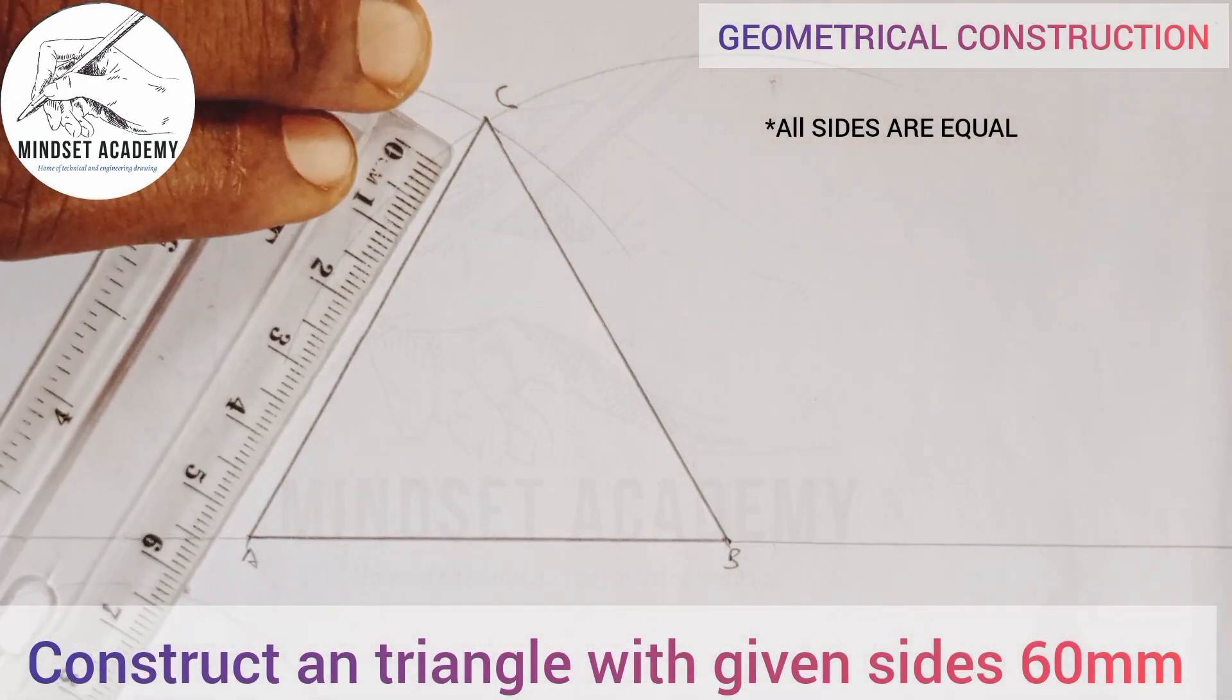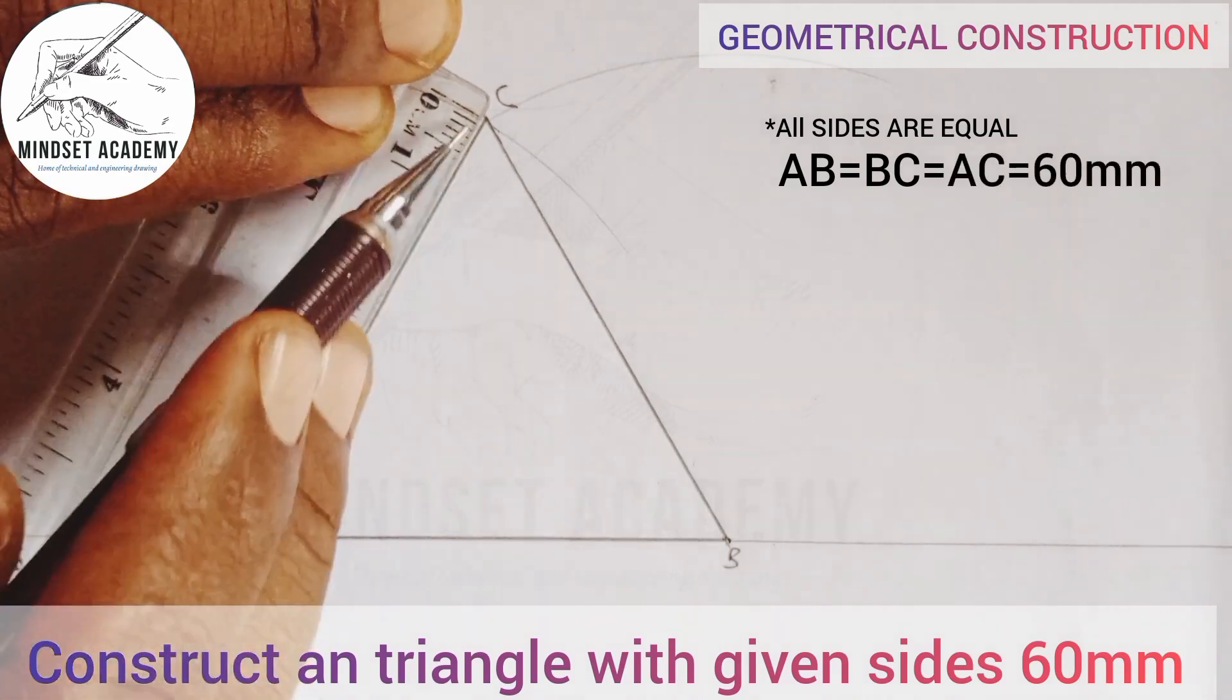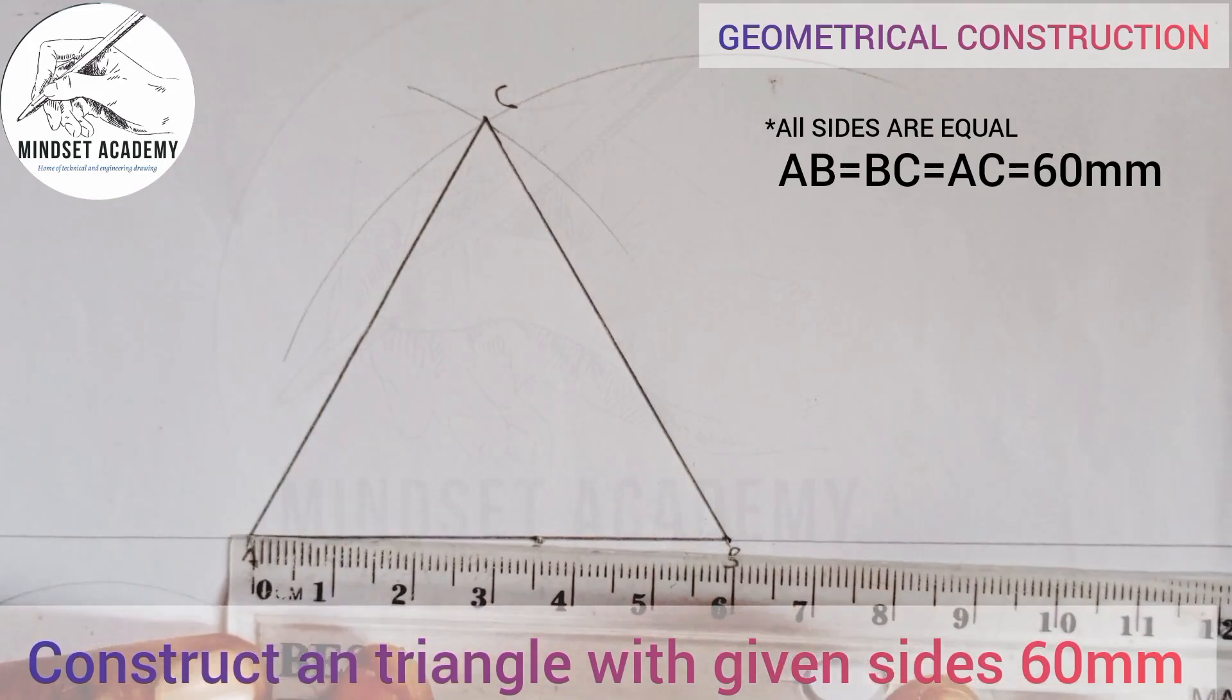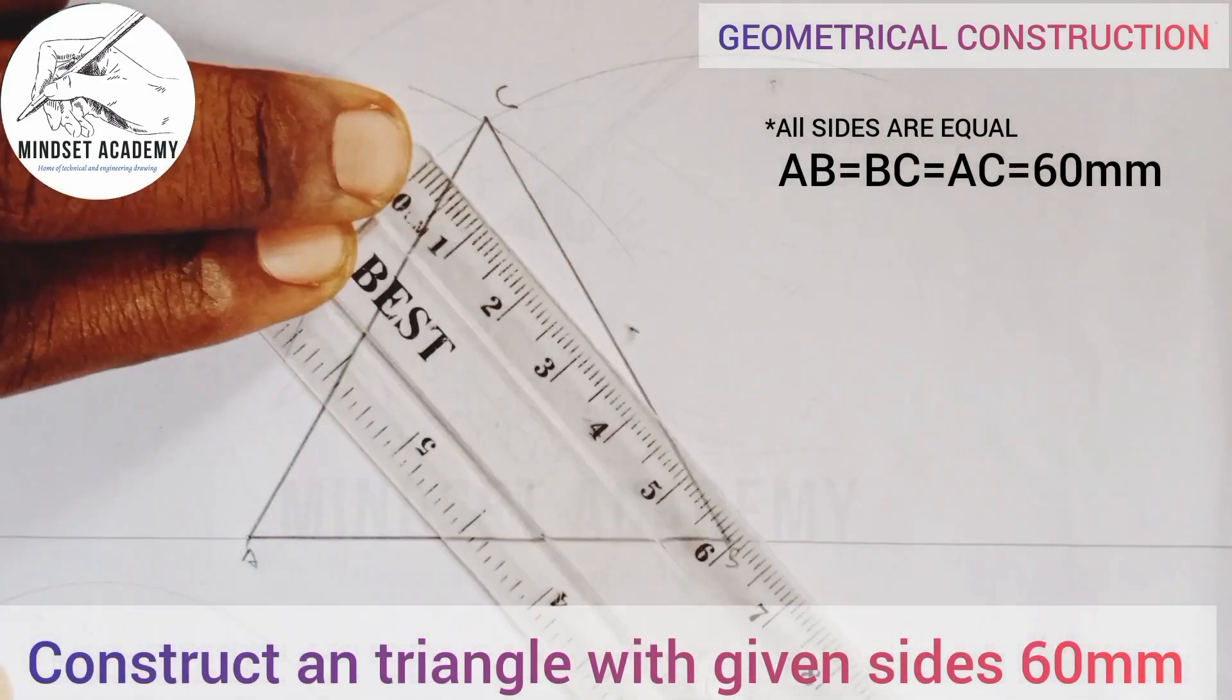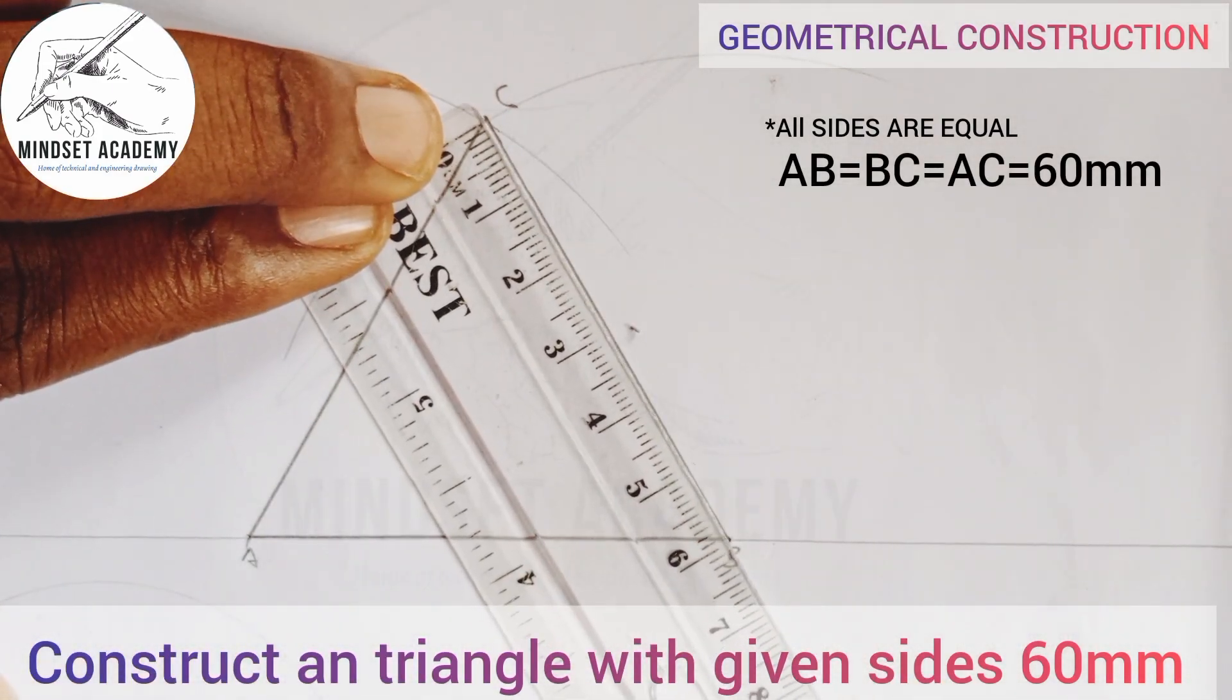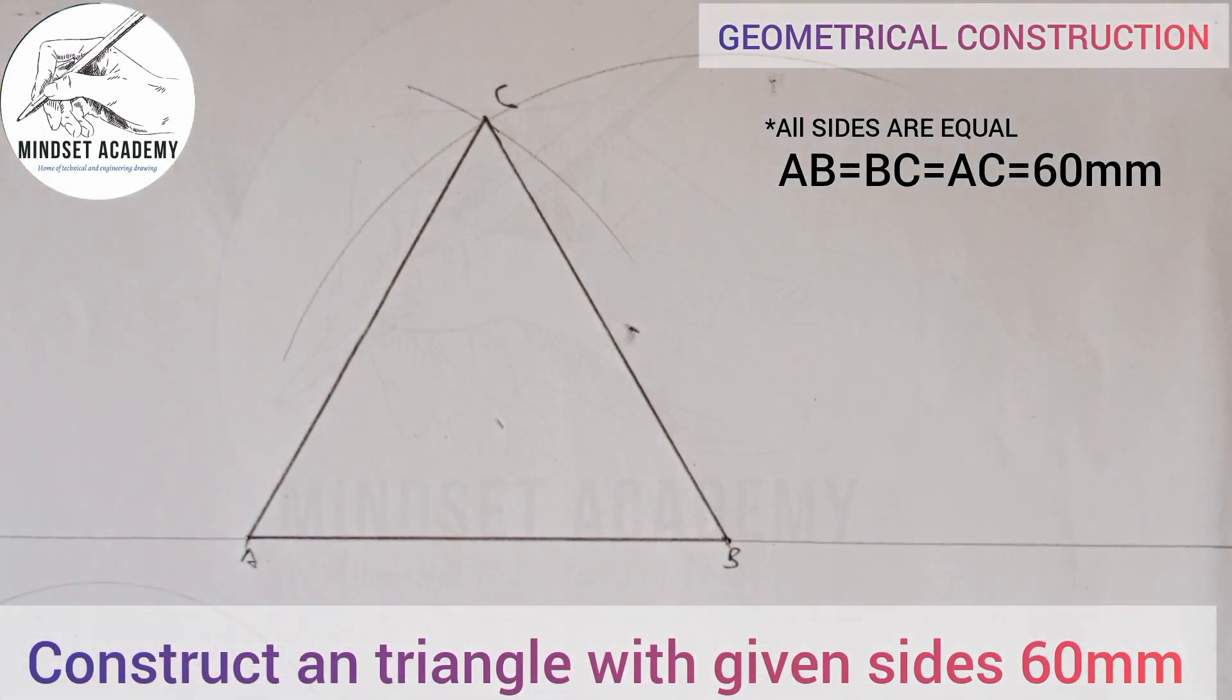Now if you look at this, from 0 to 6 is given to be 60. So that is AC is also equal to AB, which is also from 0 to 6, 60. Then it's also equal to BC. So from 0 here to 60, all the sides are equal.